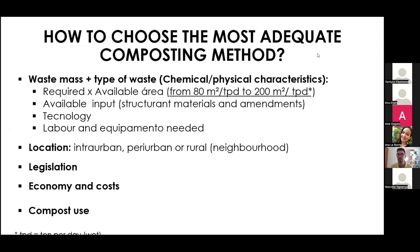There's no single composting method for the whole world or even for different cities in the same country. You choose the composting method adequate to your own scenario — depending on availability of area, inputs, waste characteristics, labor and equipment, location (intra-urban, peri-urban, or rural), and intended compost use. Area requirements vary a lot: from 80 square meters per ton per day to 200 square meters per ton per day depending on the system.